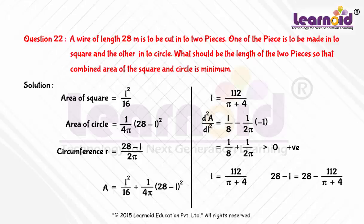The length of wire for making the circle is 28π by (π plus 4).